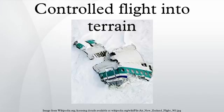A controlled flight into terrain is an accident in which an airworthy aircraft, under pilot control, is unintentionally flown into the ground, a mountain, a body of water, or an obstacle. In a typical CFIT scenario, the crew is unaware of the impending disaster until too late. The term was coined by engineers at Boeing in the late 1970s.